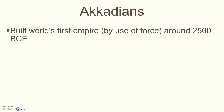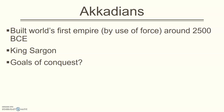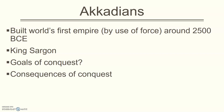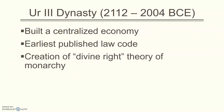The Akkadians created the first empire by force — they conquered others, led by the king Sargon. Goals of conquest were really to control metal production, metal mining, and production of weapons. If you control the metals that make all the tools, weapons, and wealth, you're in power. Consequences of these conquests: it begins to spread cuneiform, which is then adapted and adopted by other places. Then you get Ur — they build a centralized economy, establish a law code, and create the concept of divine right.